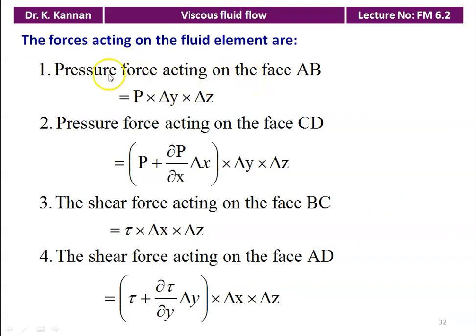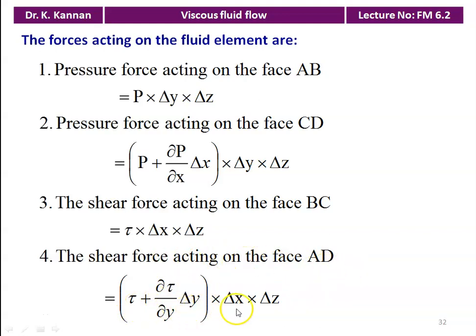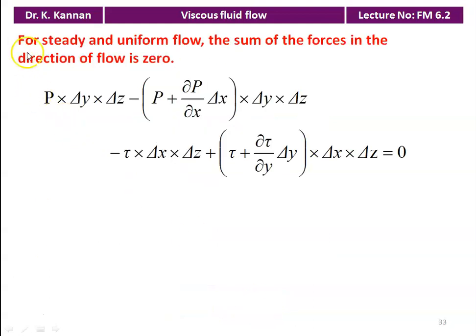The forces acting on the fluid element are: pressure force on face ab = p·δy·δz, pressure force on face cd = (p + ∂p/∂x·δx)·δy·δz, shear force on face bc = τ·δx·δz, and shear force on face ad = (τ + ∂τ/∂y·δy)·δx·δz. For steady and uniform flow, the sum of forces in the direction of flow equals zero. Substituting and expanding these terms, the first and second pressure terms cancel, and the two shear stress terms also cancel leaving a simplified result.